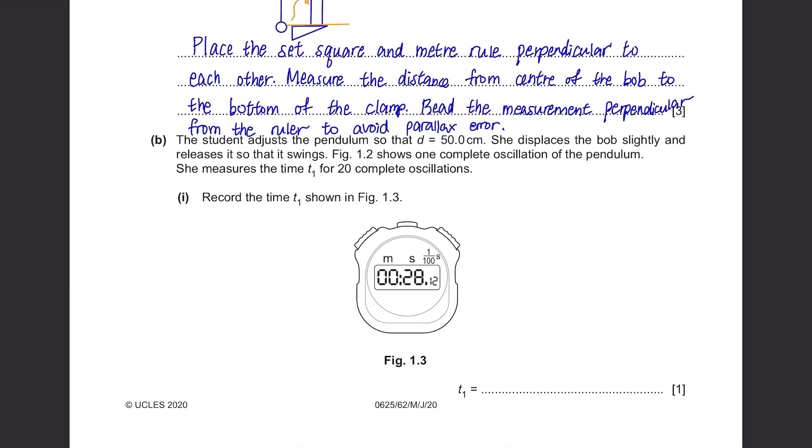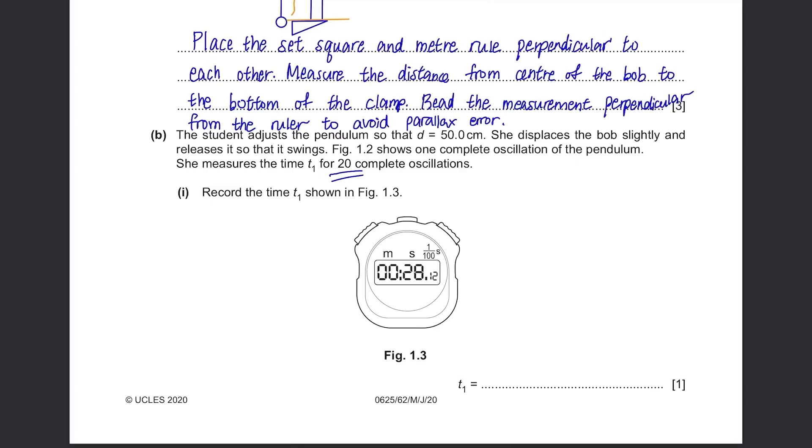Part B. The student adjusts the pendulum so that d equals 50 cm. She displaces the bob slightly and releases it so that it swings. Figure 1.2 shows one complete oscillation of the pendulum. She measures the time t1 for 20 complete oscillations. Record the time t1 shown in figure 1.3. It's 28.12 seconds.